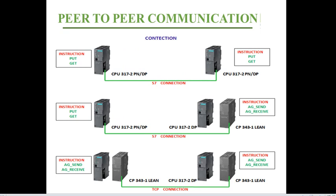Let's look at the layout. For the first type — peer-to-peer communication — the two PLCs are connected by Profinet. The two PLCs must have different IP addresses within the same network, and the connection type is S7 connection.